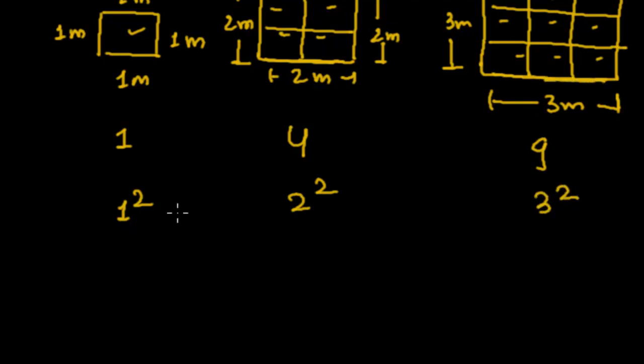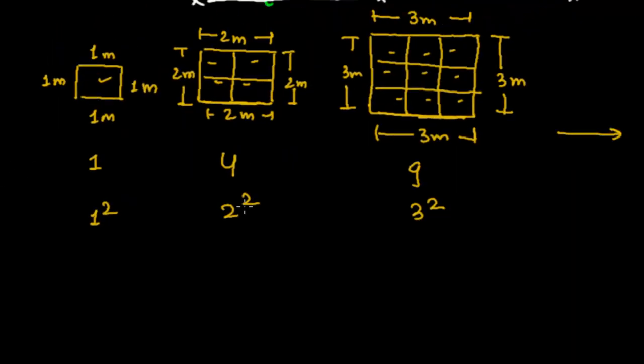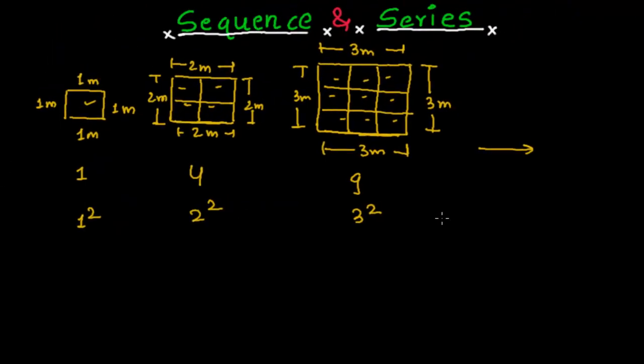See, it is following some pattern. It is 1 squared, 2 squared, 3 squared, 4 squared, 5 squared, and so on. We can go as long as we like. Right?